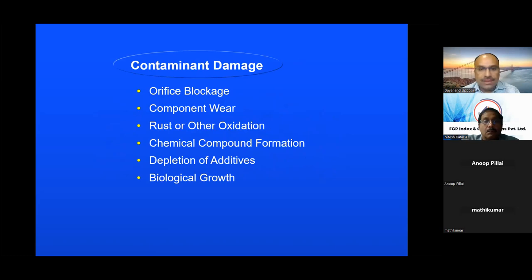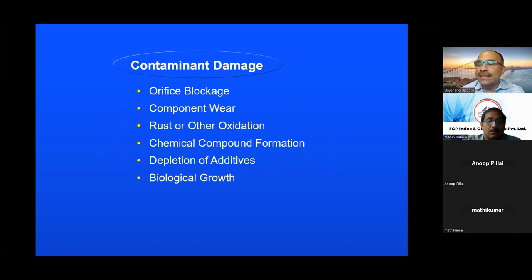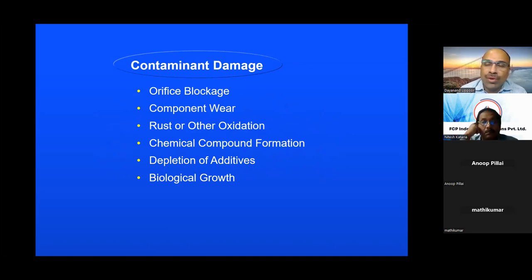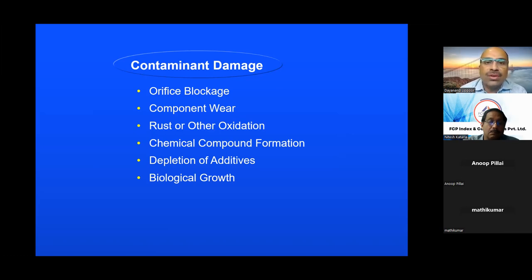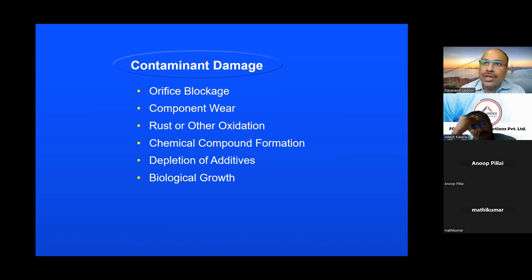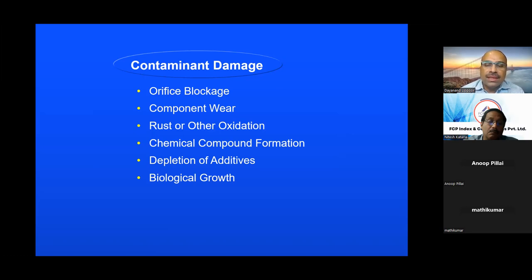What happens when there is contaminant damage? As technology keeps improving, the kind of systems being designed have changed. Fifteen to twenty years back, you had simple directional valves and simple gear pumps. As the machines produced now use more sophisticated hydraulic systems - pumps, hydraulic valves - the clearances in these valves and pumps are very, very fine. If there is contaminant in your hydraulic oil, there is blockage of orifices, components start wearing down, there is rust or other oxidation, and chemical compound formation.